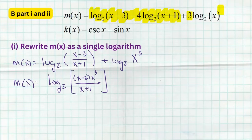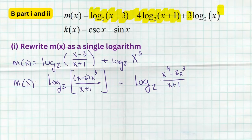We could clean it up further by distributing x³ in the numerator, giving log base 2 of [(x⁴ − 3x³) / (x + 1)]. We've accomplished the task of creating one log base 2 with one value inside. I can't guarantee one of the two functions in Section B will be logarithmic, but I'm 99% confident — so please make sure you know how to use those log rules.